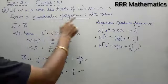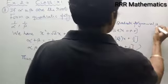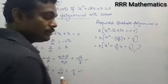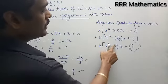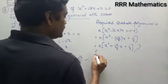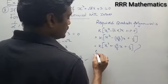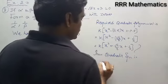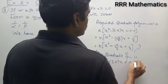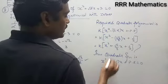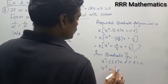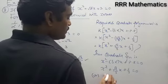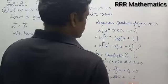In this case, they are asking for the quadratic polynomial, so your answer is k times x squared minus sum of the roots into x plus product of the roots. I replace the sum and product of the roots and finally get k times x squared plus root 2 by 3 into x plus 1 by 3. If they are asking for the quadratic equation, it is x squared minus sum of the roots into x plus product of the roots equal to 0. Substituting, you get x squared plus root 2 by 3 x plus 1 by 3 equal to 0. Taking LCM, 3x squared plus root 2 x plus 1 equal to 0.